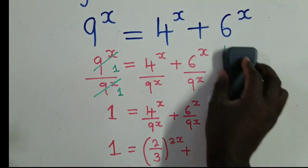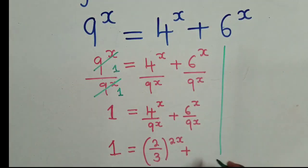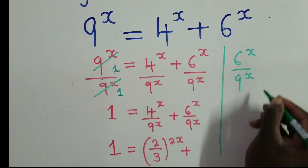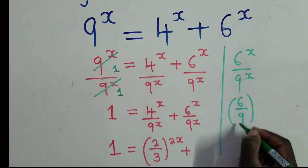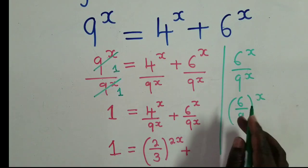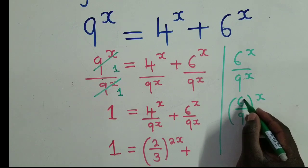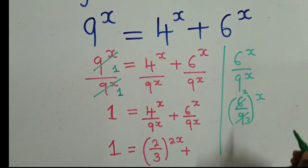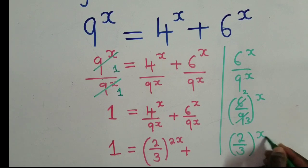Now for the second term, we need to make sure there is (2/3) somewhere with power x. We have 6^x over 9^x, which can be written as (6/9)^x. To simplify: 3 into 6 is 2, 3 into 9 is 3, so we reduce to (2/3)^x.